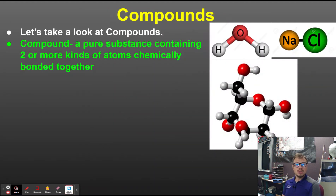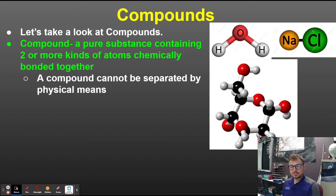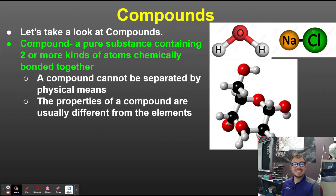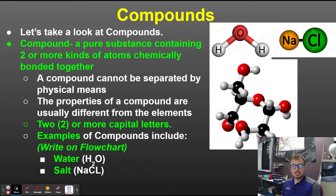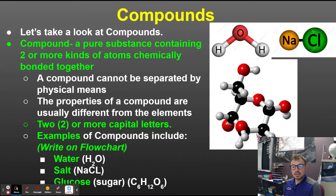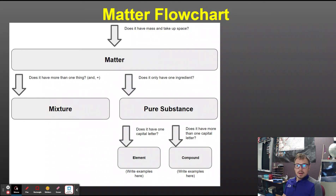What happens if it has more than one capital letter? Then it's a compound. A compound is a pure substance containing two or more kinds of atoms chemically bonded together, and it cannot be separated by physical means. The properties of a compound are usually different from its elements. Examples include water (H₂O — two capital letters), salt (NaCl — sodium and chlorine, where the 'l' is lowercase), and glucose (C₆H₁₂O₆ — three capital letters). These are all compounds.